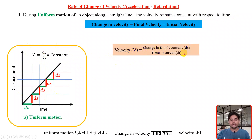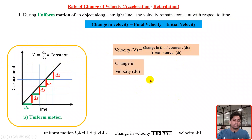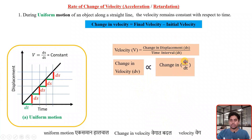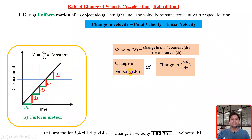We know that velocity is equal to change in displacement divided by time interval — velocity denoted as v, change in displacement as ds, and time interval as dt. If I want to find the change in velocity, it will be directly proportional to the change in the ds/dt ratio. However, in uniform motion, since the ds/dt ratio remains constant — meaning there is no change in ds/dt — correspondingly there will be no change in velocity. If this term is constant, change in velocity will be constant, and I can say there is no change in velocity for any time interval, because for any time interval ds/dt is constant.